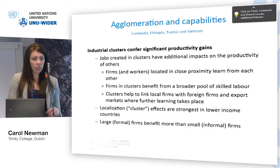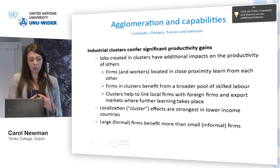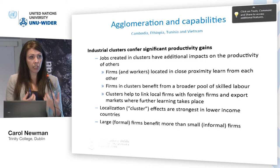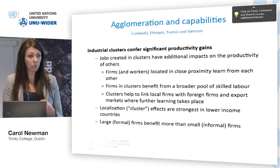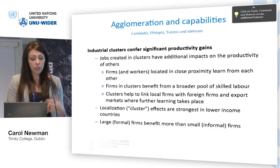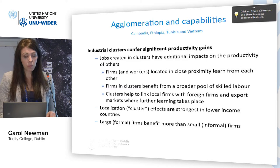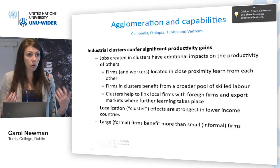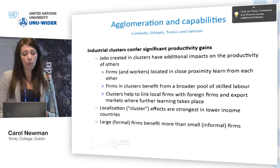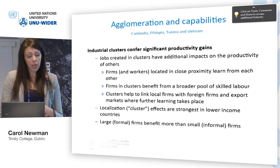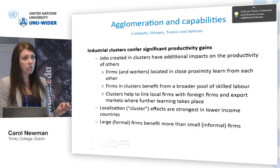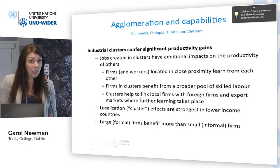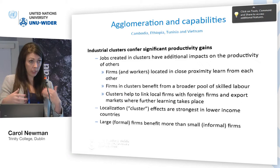The second main area in terms of firm capabilities and the transfer of knowledge is through agglomeration. If you have jobs created in well-performing clusters, they can have additional impacts on productivity. What we found in most of our studies is that firms and workers located in close proximity learn from each other — there are productivity spillovers associated with that. Firms located in clusters benefit from a broader pool of skilled labour, which means better matching of jobs to workers. Clusters, and especially economic zones, have the potential to help link domestic firms to foreign firms and to export markets, where further learning can take place.